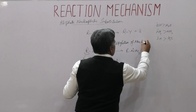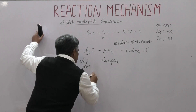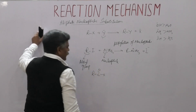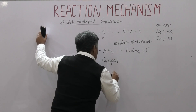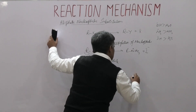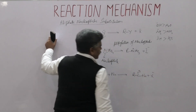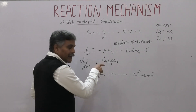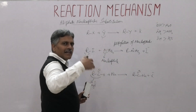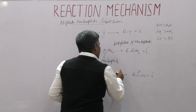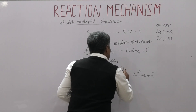For acylation of nucleophiles: if the substrate is R–COX, where R–CO is the acyl group, and it reacts with any nucleophile (Nu), the product is R–CO–Nu plus X⁻. This reaction involves acylation of the nucleophile because the acyl group is attached to a nucleophilic group such as nitrogen, oxygen, or sulfur. That is why this reaction is called acylation of the nucleophile.